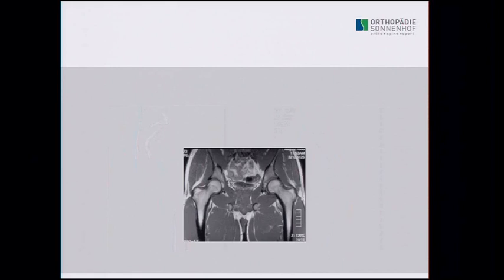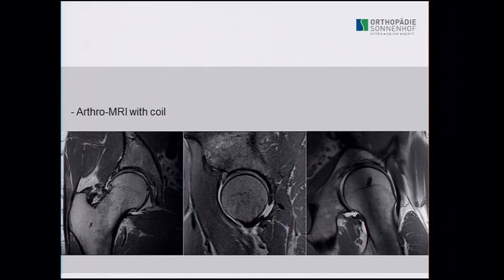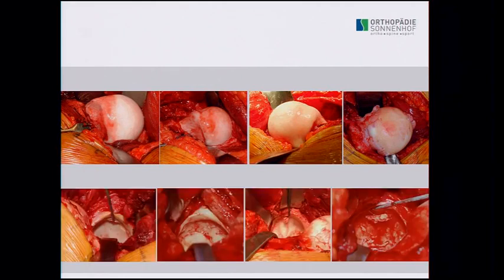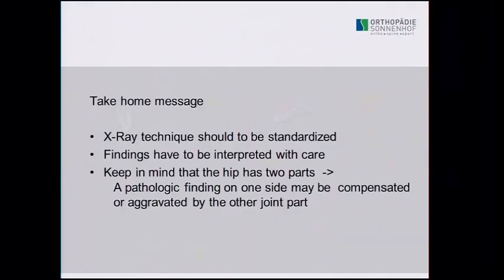Regarding MRI, we must use a coil that gives sufficient information to understand what is happening and to correlate with intraoperative findings. However, we must be careful: up to 60 percent of people with no symptoms have labral changes on MRI. A small labral change does not necessarily mean that is the patient's problem — we cannot see pain on MRI. X-rays should be standardized, findings interpreted with care, and always keep in mind that the hip has two parts: a pathologic finding on one side may be fully compensated or aggravated by the other joint part.